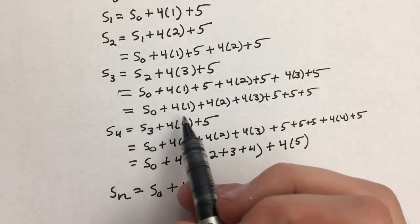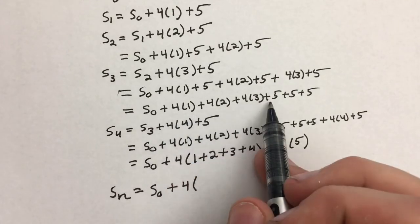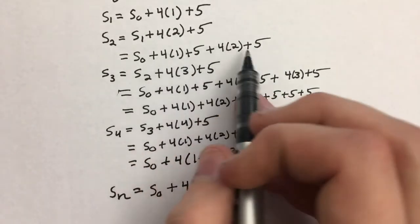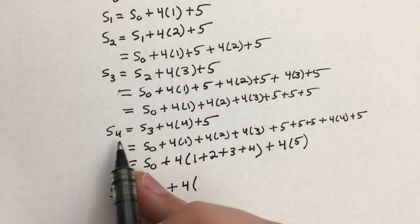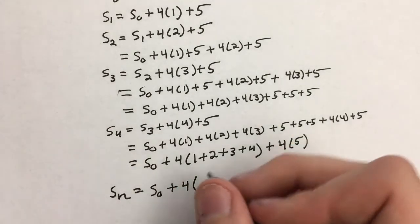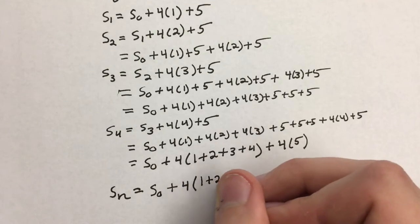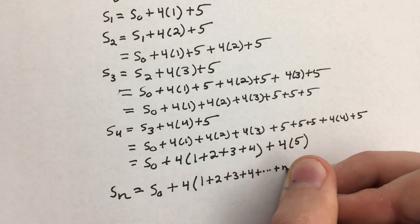Now notice something here. If we factored out a 4 we'd have 4 times 1 plus 2 plus 3. So each time we add another term up to the nth. Here n equals 4 and we go from 1 all the way up to that n. So we're going to make this 1 plus 2 plus 3 plus 4 plus... plus n.